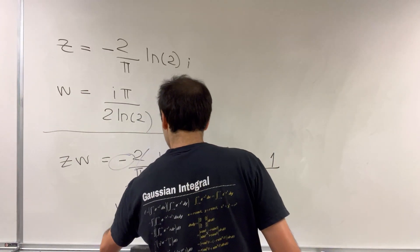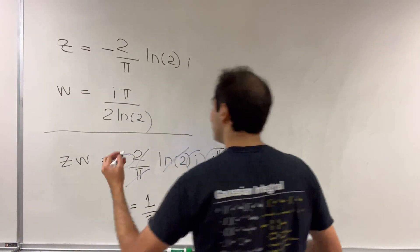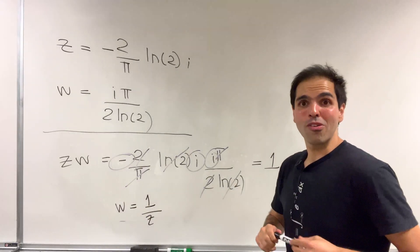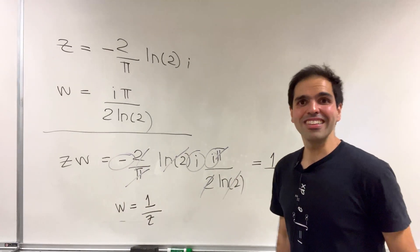So in fact, w is 1 over z, or z is 1 over w. How cool is that?